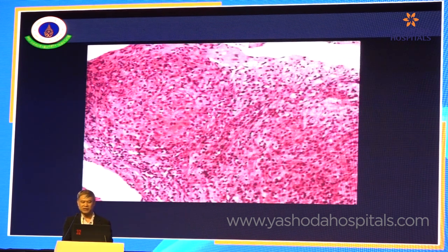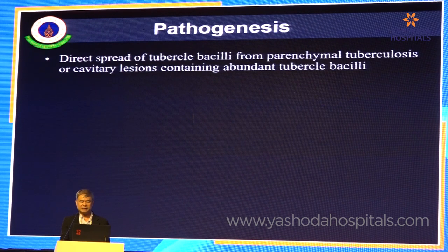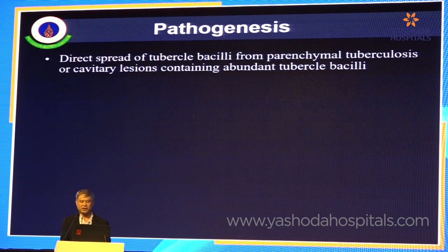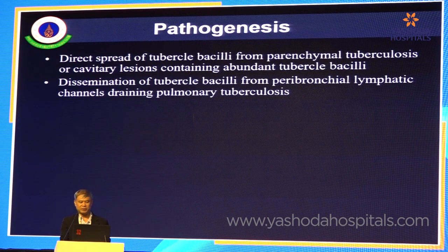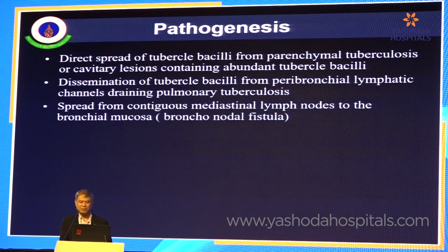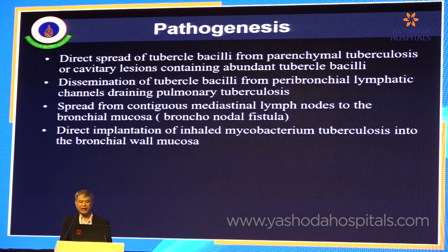This is a pathology slide where you can see the granuloma with special cells. The pathogenesis is either the direct spread of tubercle bacilli from parenchymal tuberculosis with a high burden of bacilli like in cavitary lesions, or dissemination from peribronchial lymphatic channels draining to the mediastinal lymph nodes, or rupture of nodes beneath the trachea or bronchi into the endobronchial airway, or direct implantation of inhaled mycobacterial tuberculosis into the bronchial wall mucosa.